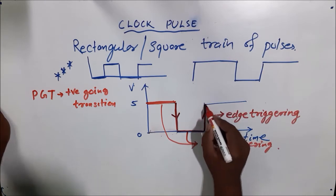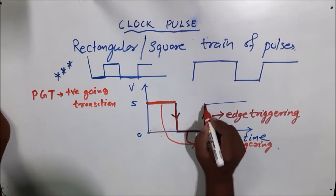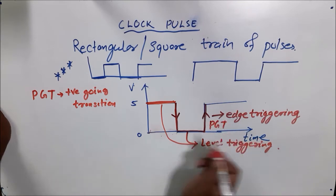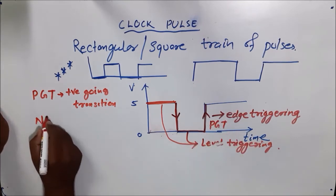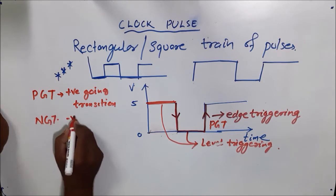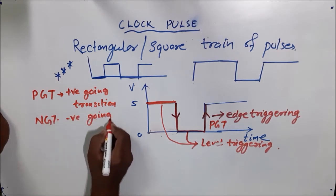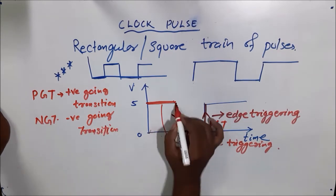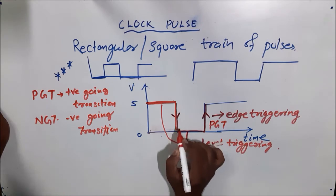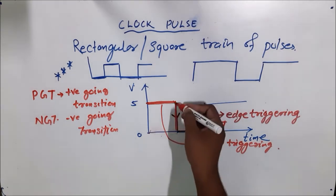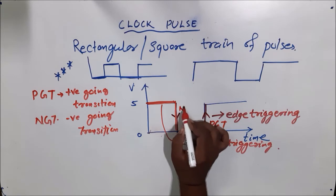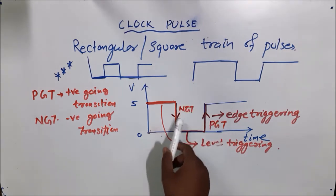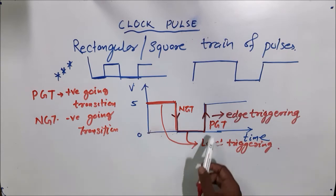Positive going transition means from 0 to positive — from down level going to positive. So this transition is PGT. Or it may be NGT, that is called negative going transition, meaning from high to low — from positive potential to negative potential going. That is called NGT, negative going transition. Some flip-flops respond to NGT, some respond to PGT.